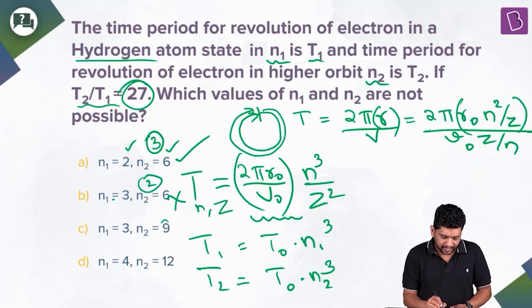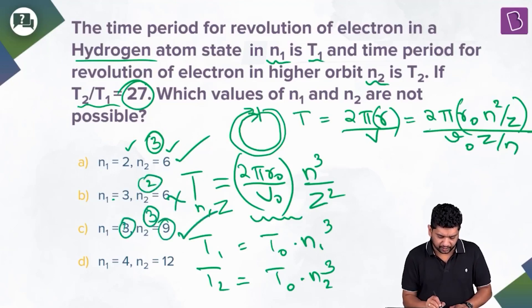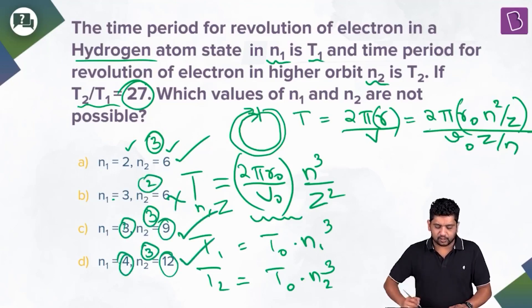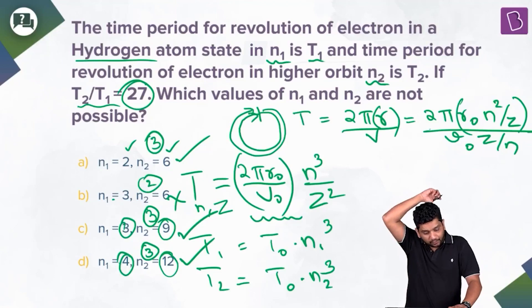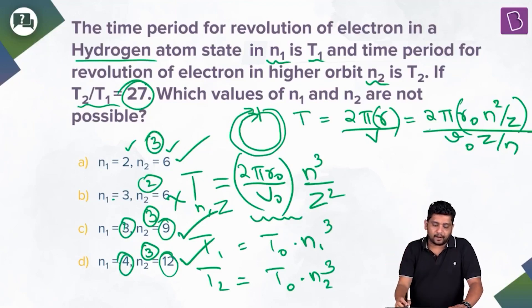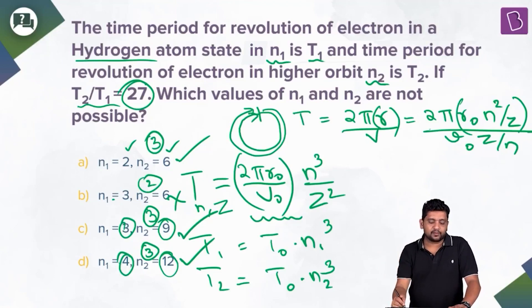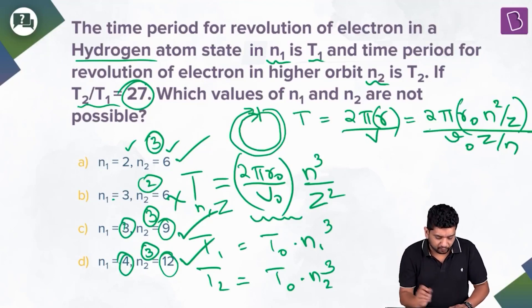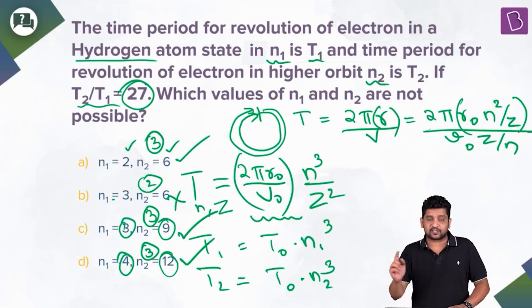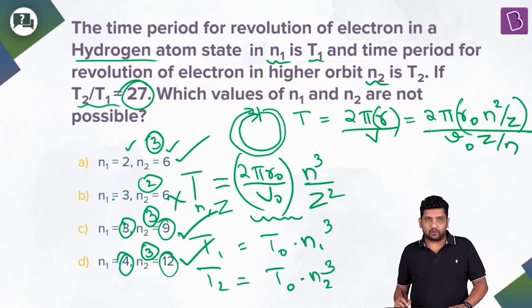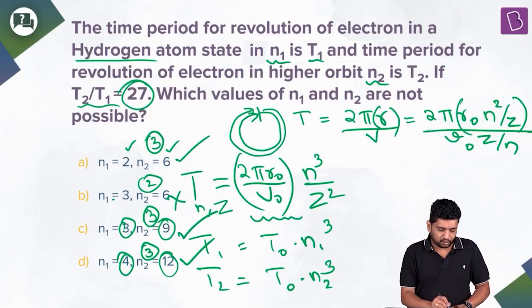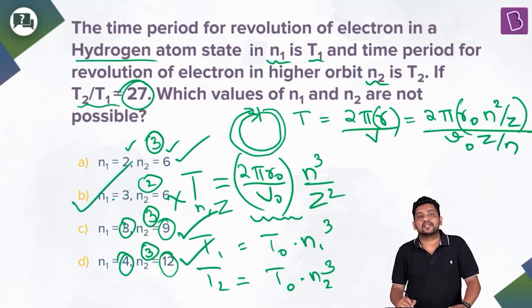Wherever n₂/n₁ = 3, the condition is satisfied. But for n₁ = 3 and n₂ = 6, we get n₂/n₁ = 2, not 3. That option does not satisfy T₂/T₁ = 27, so it is not possible. My final answer is option B.